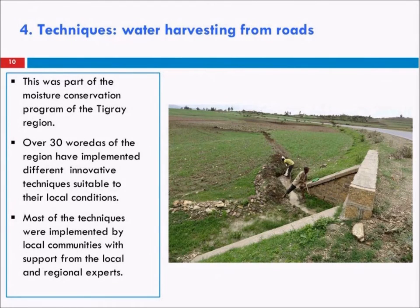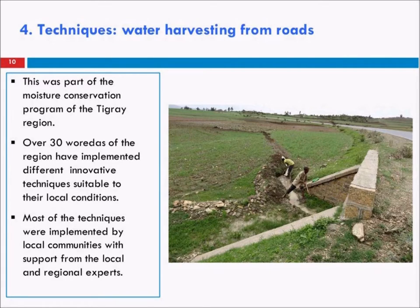The techniques implemented were part of the whole moisture conservation program of the Tigray region. The region took this idea to be implemented throughout, and over 30 woredas implemented different techniques, most of them by the local community. One example shows a farmer with his son diverting runoff from a culvert into a percolation pond for supplemental irrigation as well as for groundwater recharge.